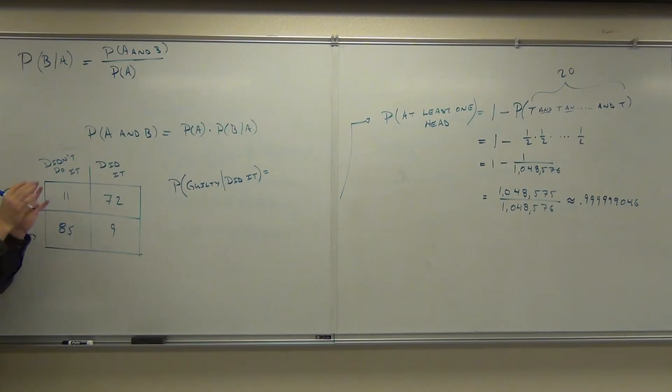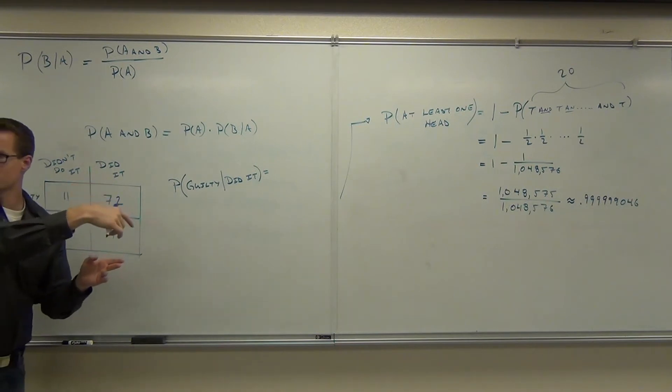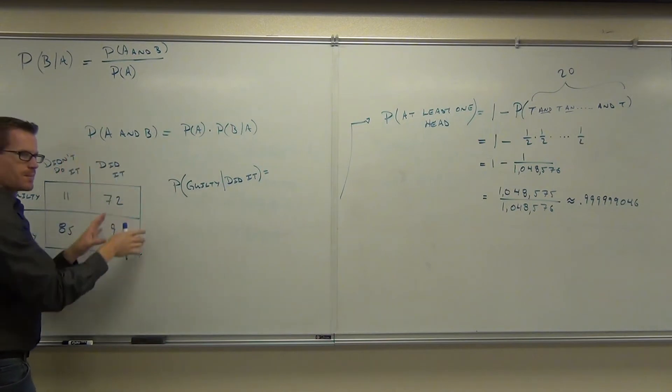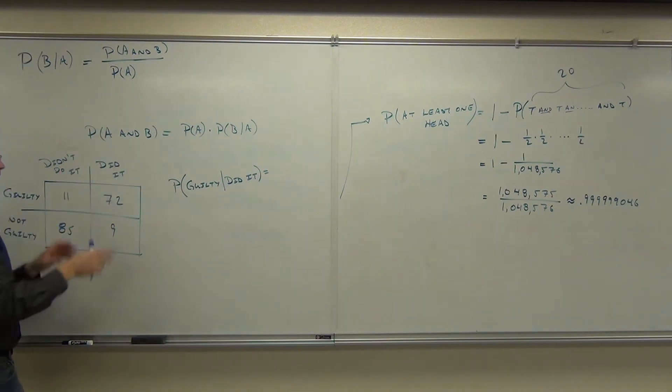So the first event, you're saying the first event already happened. They either did it or they didn't do it. So they're in one of these tables, given one of these columns. Given that they're in one of these columns, what's the probability that they're going to be found guilty? That's what this situation says. Are you with me on this? So given that you know they already did it, what's the probability that they're going to be found guilty?